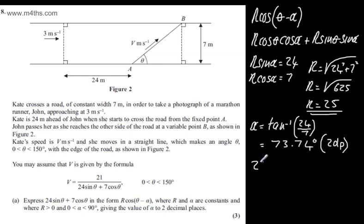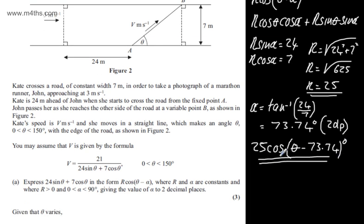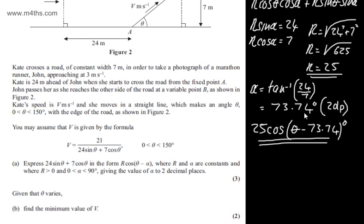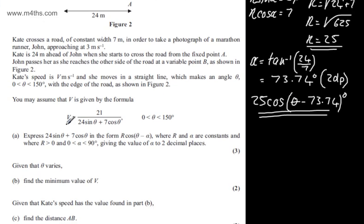So 73.74 and that is correct to 2 decimal places. So putting this back together, we've got 25 cos of theta minus 73.74 degrees and that will give us now the 3 marks. If we just think about this, this is just two transformations of the cosine curve. All we've done is use this identity to write it in that form.